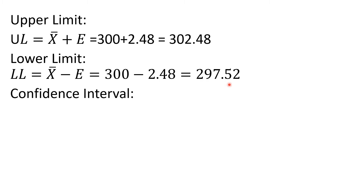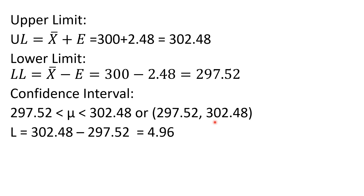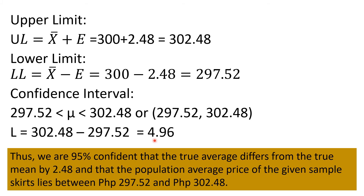For the confidence interval, it is between the lower limit and the upper limit. So the confidence interval is greater than 297.52 and less than 302.48, or simply between 297.52 and 302.48. For the length: 302.48 minus 297.52, so the length is 4.96. For our conclusion: we are 95% confident that the average differs from the true mean by 2.48 and that the population average price of the sampled skirts lies between 297.52 and 302.48.